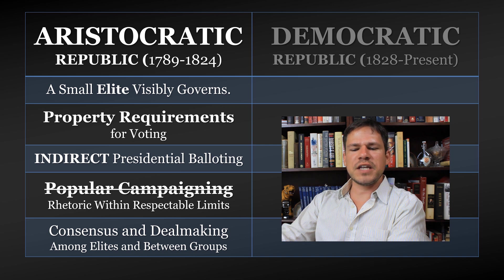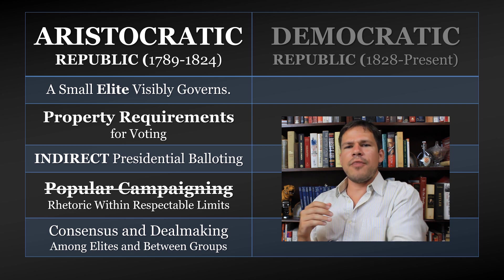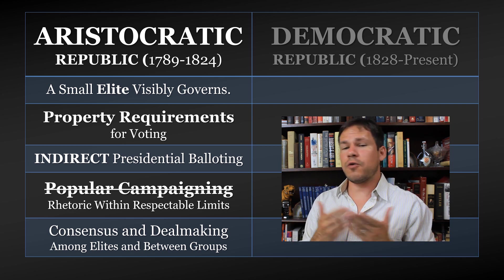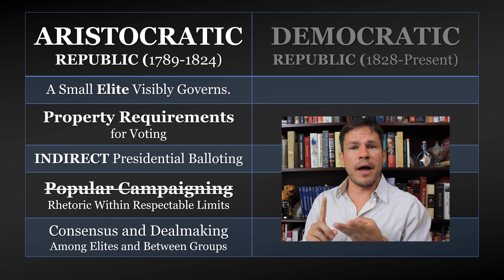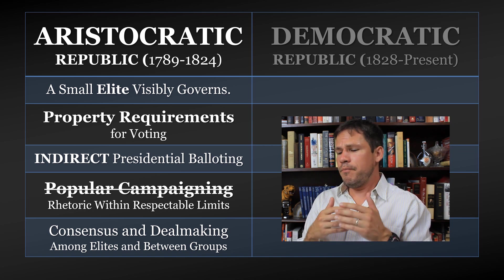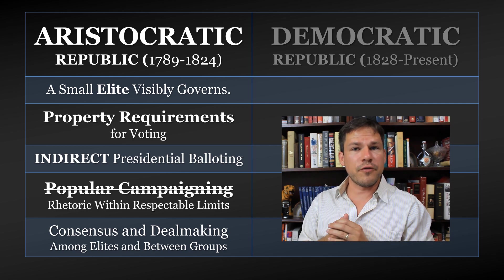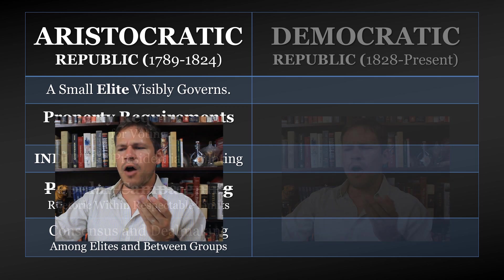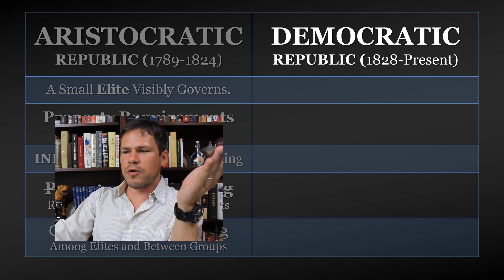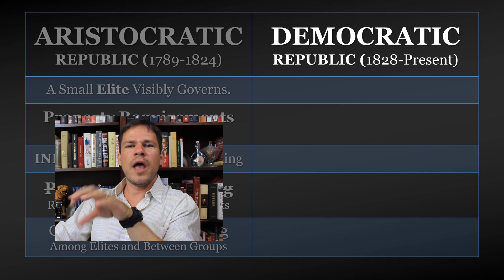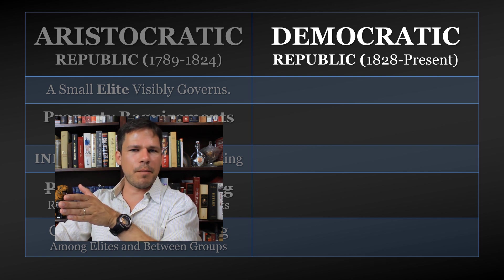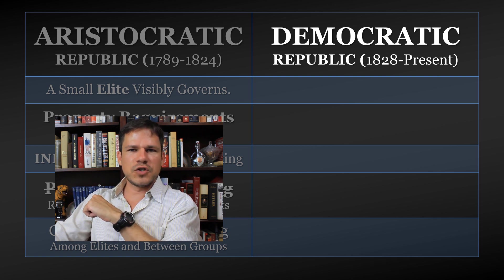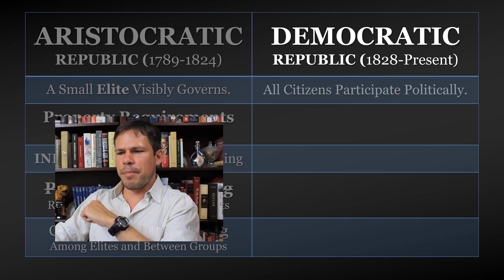Popular campaigning was frowned upon in aristocratic republics. Rhetoric is kept within respectable limits. Somebody's not supposed to be a demagogue, not supposed to be trying to appeal to the masses, because the masses are seen as dangerous — we get power from them, but they should not be calling the shots. There is also a great deal of consensus and deal-making among elites and between groups. This is why I discuss Henry Clay as an aristocrat — when you look at the Missouri Compromise, the Nullification Compromise, the Compromise of 1850, this is how you solve disputes in an aristocratic republic.